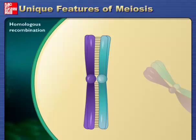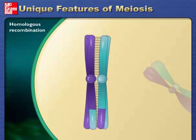The second unique feature of meiosis is that genetic exchange occurs between the homologous chromosomes while they are physically joined. The exchange process that occurs between paired chromosomes is called crossing over.